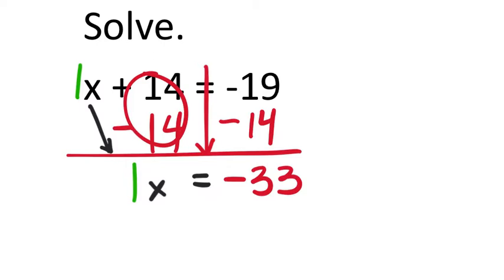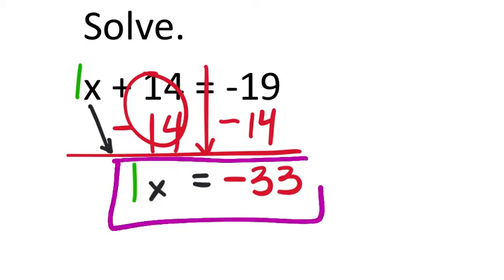There's no expectation that you do that in your head — you should be doing that on the calculator. Negative 19 minus 14. Would this actually be the solution? Let's find out. If I take 1x and replace it with negative 33, then I'd have negative 33 plus 14, which gives us negative 19. That's a true statement, which means negative 33 is our solution.